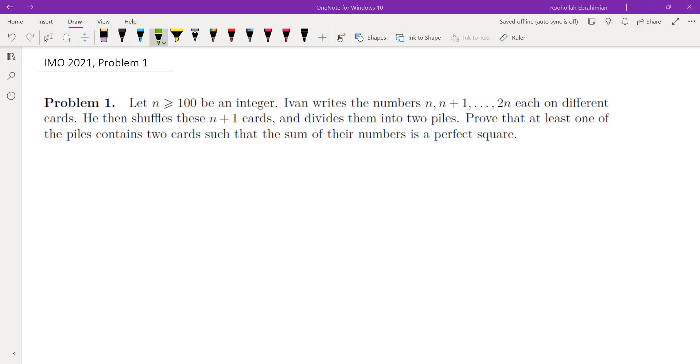Hello, in this video we're going to go over problem 1 from IMO 2021. Let n greater than or equal to 100 be an integer. Then we write down the numbers from n to 2n, each on different cards.